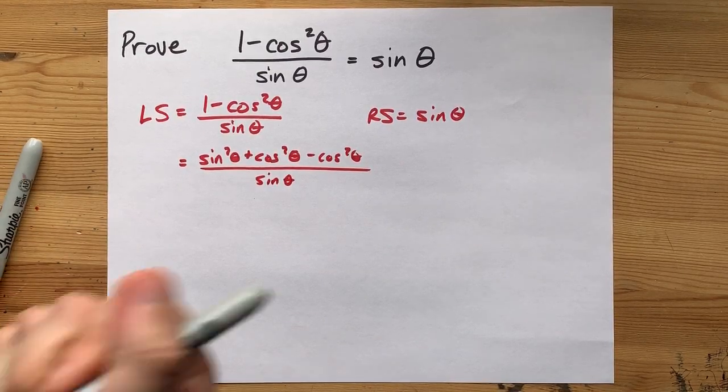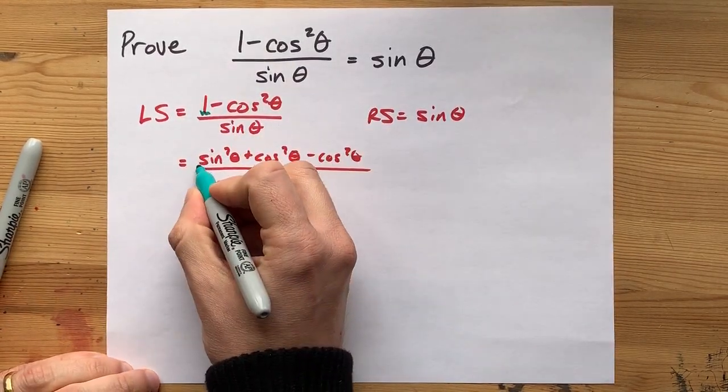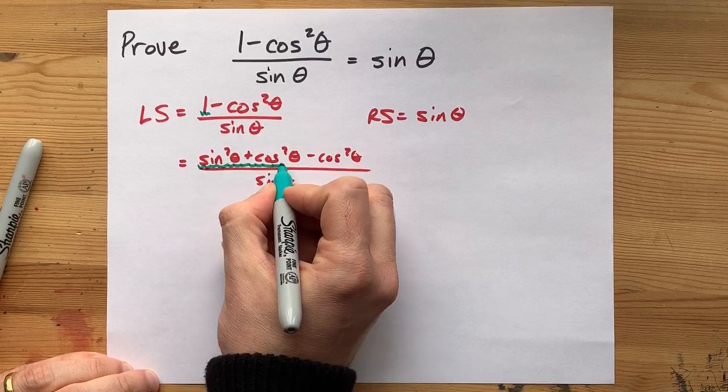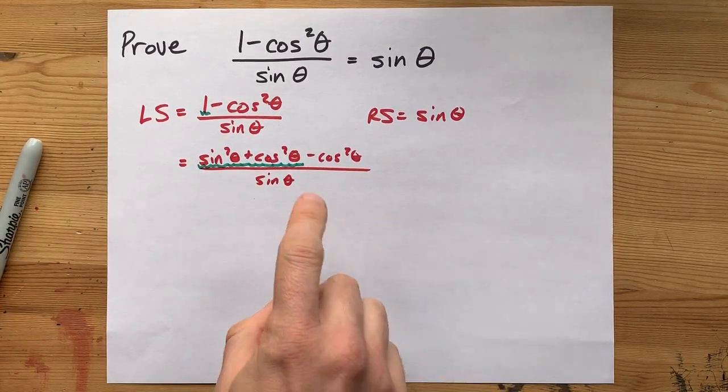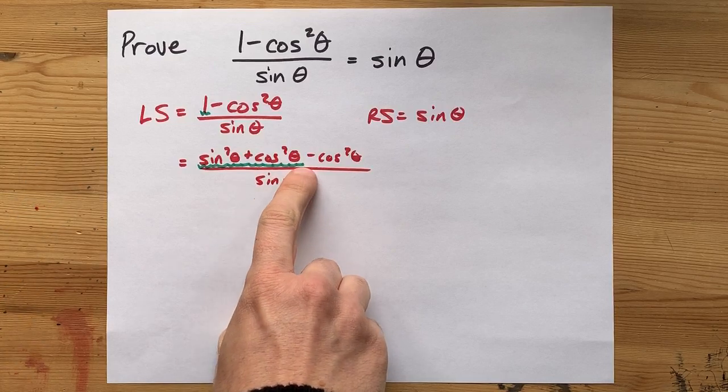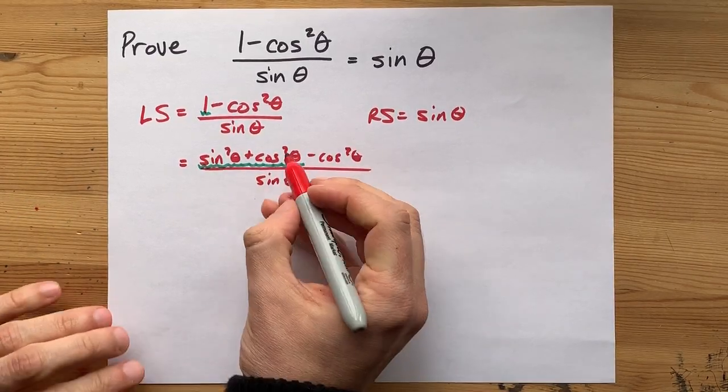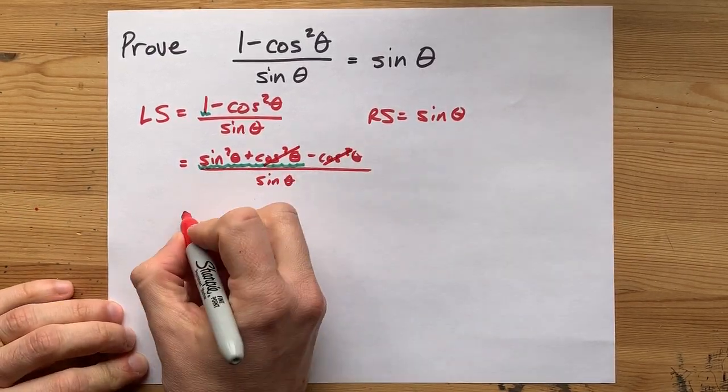Note, I have only rewritten the 1 as sine squared plus cos squared. But, plus cos squared theta minus cos squared theta, those cancel each other out.